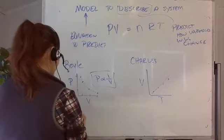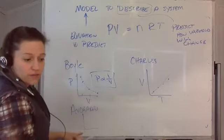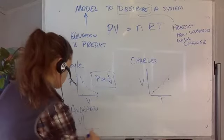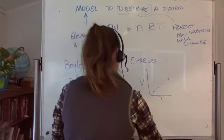So Avogadro figured out, can you still see that? Yeah. Figured out that volume with the number of moles changes, like so. And then who else? Gay-Lussac.